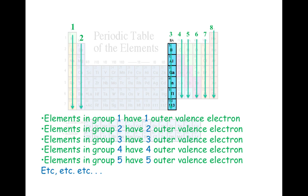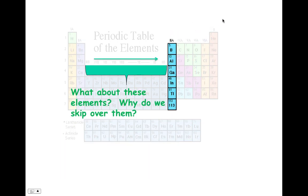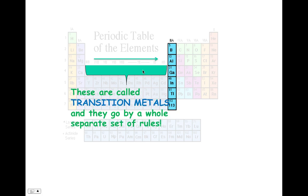Just a reminder, all elements in group one have one outer valence electron. Anyone in this group would have two, anyone in this group would have three, four, five, six, seven, eight, etc. These guys, as I said, we skip over them when we're counting. We skip over them because they're transition metals and they go by a whole different set of rules. They have very specific rules and they're a little bit confusing. So you're not really going to deal with diagramming transition metals until you're in high school.